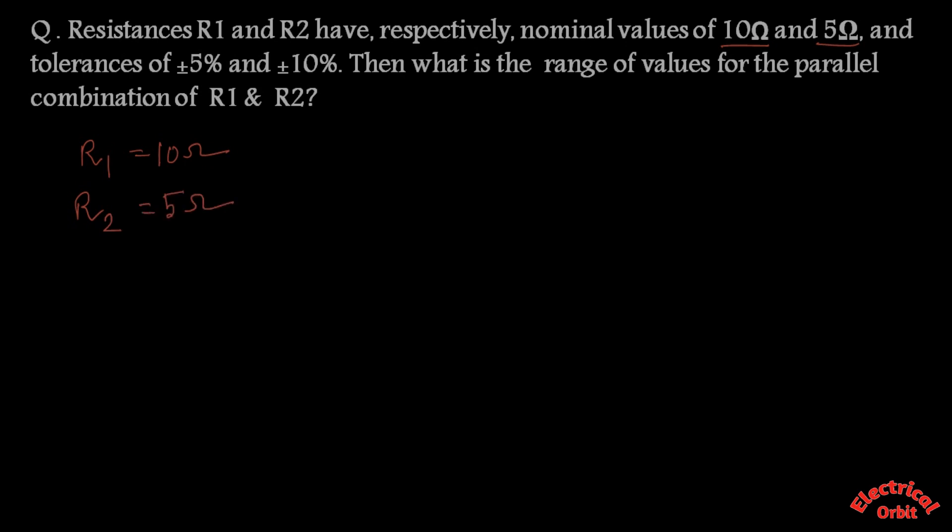The tolerance of resistance R1 is 5%, that means it is plus minus 5% tolerance. And resistance R2 is 10% tolerance. That means the value we get from measuring this 10 ohm and 5 ohm resistance may be varied between 5% and 10%.